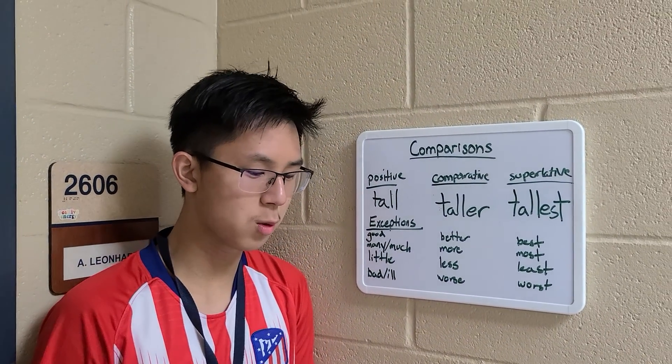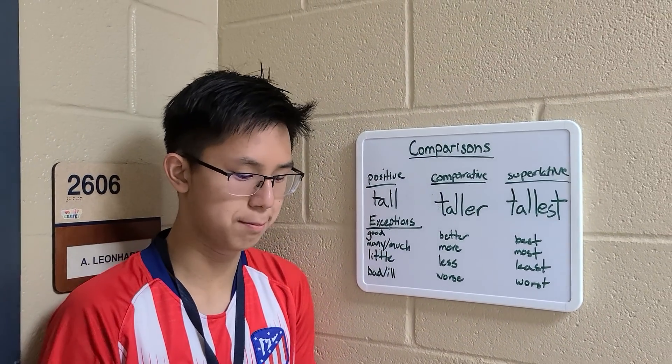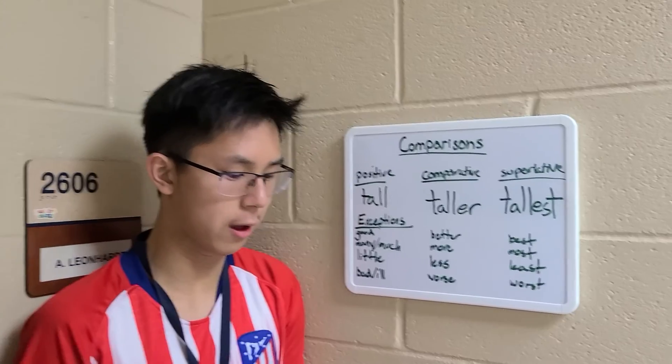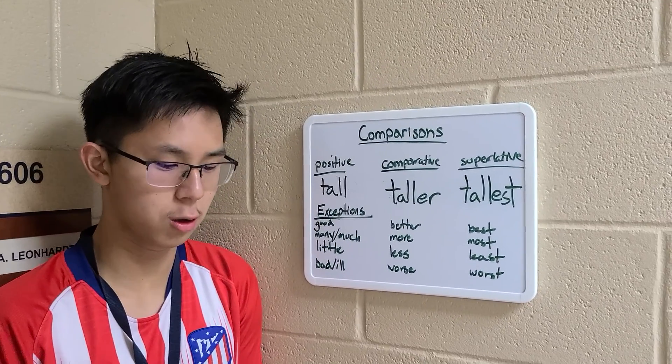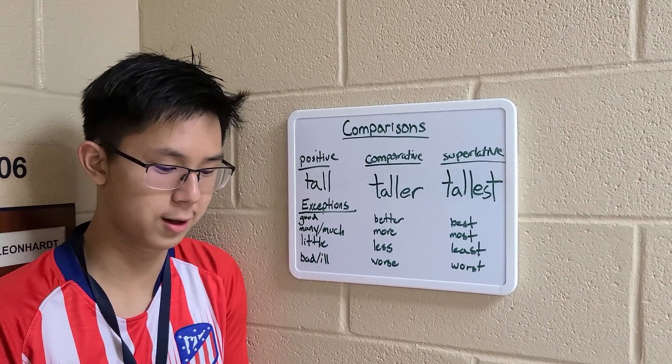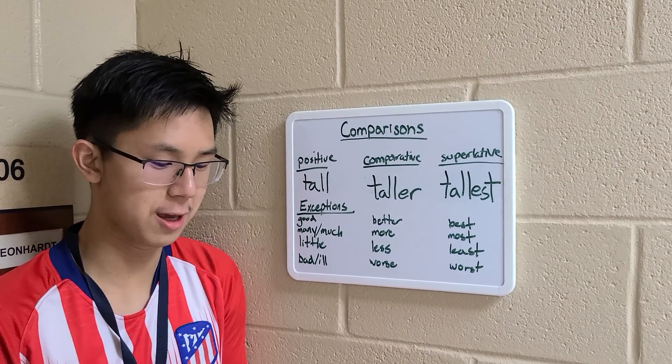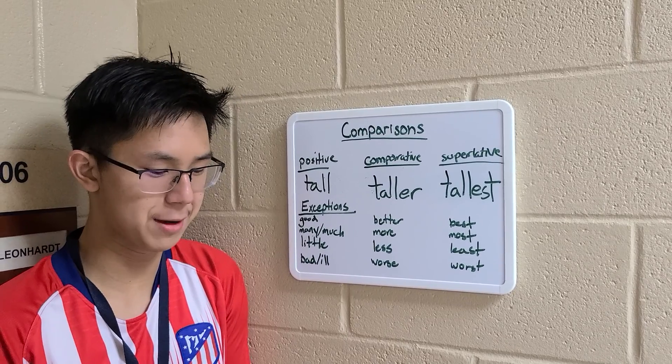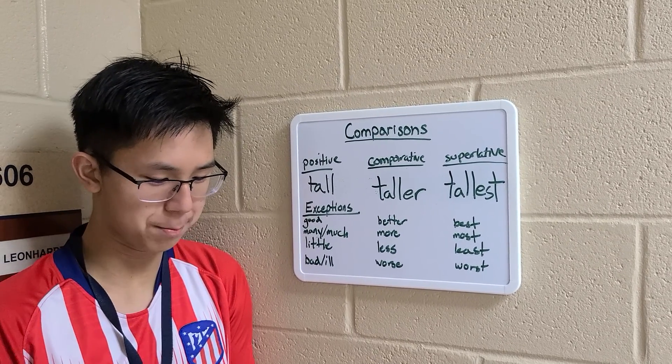If you have a one-syllable word, such as big, you will add -er or -est to the end of the word. So big would become bigger or biggest.